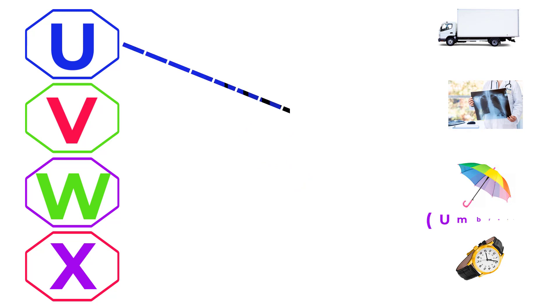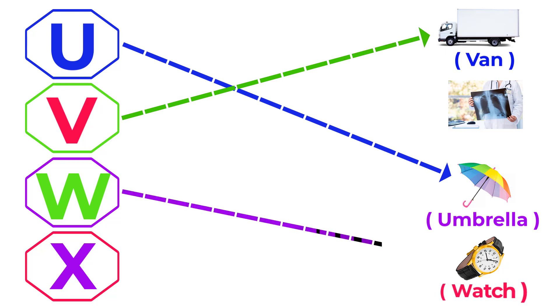U for Umbrella, V for Van, W for Wash, X for X-Ray.